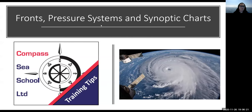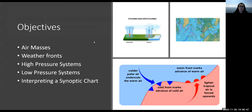Tonight we're going to look at fronts, pressure systems, and synoptic charts. This leads on from our session on Tuesday night where we looked at some basic terminology and an introduction to weather — what weather is, wind, sea state, and that kind of thing. Tonight we'll cover a quick revision of air masses, weather fronts, high and low pressure systems, putting systems together into a whole weather system, interpreting a synoptic chart, and there's an activity towards the end.